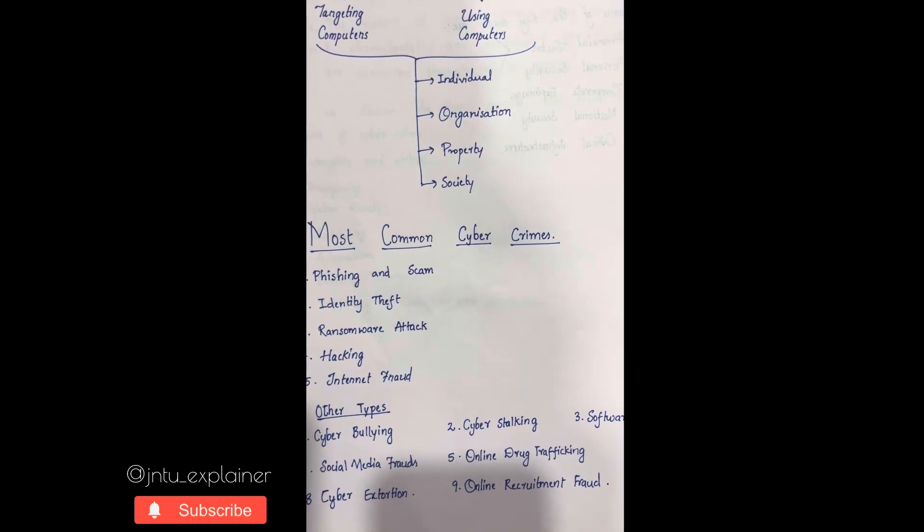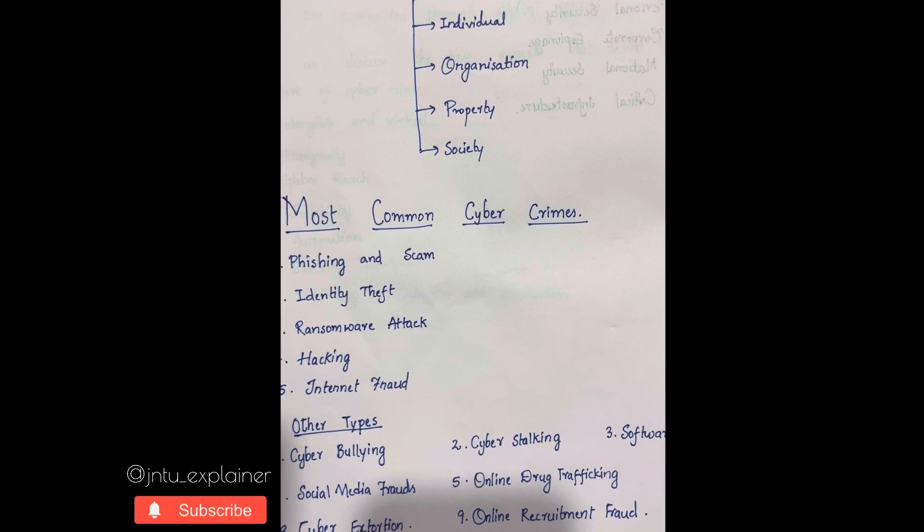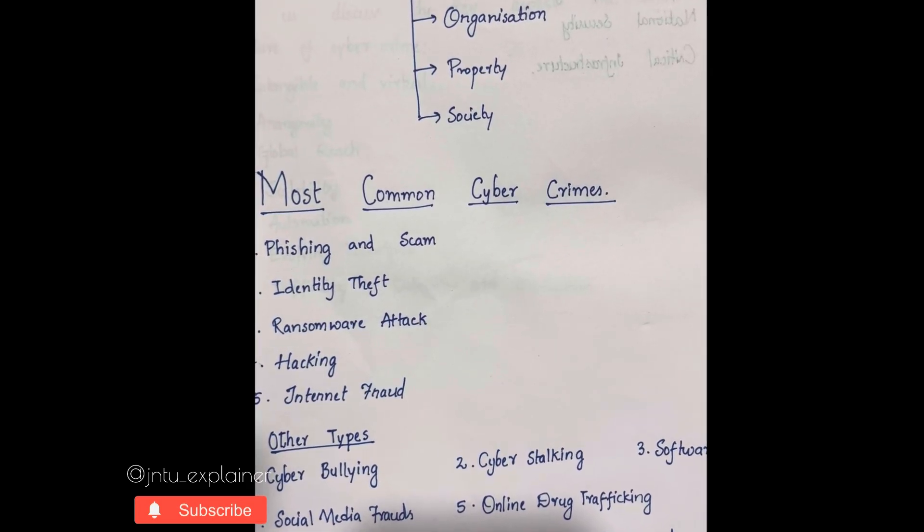The fourth one is society. In this, cyber terrorism can be a big example because they don't know whom they are targeting or what they will get, but they target huge numbers of people which comes under a society.